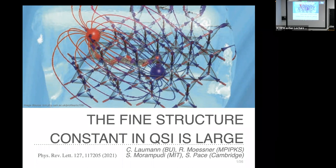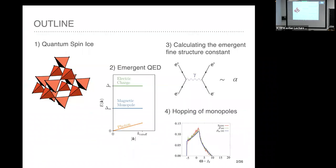The first author of this paper is at the school I'm organizing at the moment, that's Sal who's sitting here wearing a mask, and Chris Lauman is lecturing here as well. The outline is very simple: I'm going to say a few words about quantum spin ice, then how QED emerges there, calculating the fine structure constant, and if I've got time I'll say something about the gauge-charged excitations.